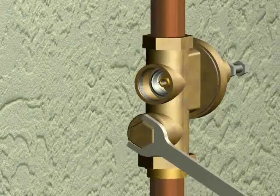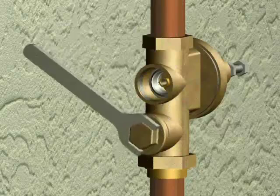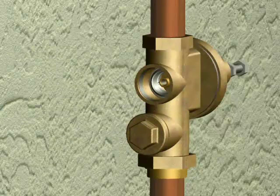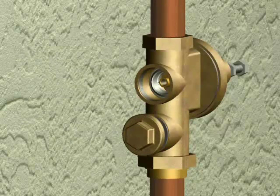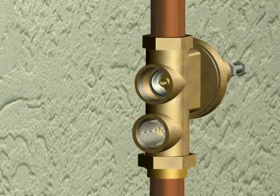Next, loosen the strainer cap with a wrench by turning counterclockwise. Remove the strainer cap, the washer, and the screen.